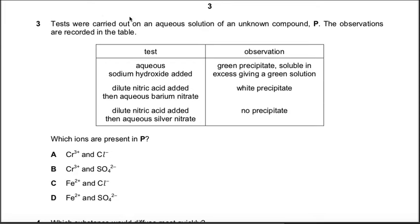Question number three: tests were carried out on aqueous solution of unknown compound P. The observations are recorded in the table. Test: aqueous sodium hydroxide added, green precipitate. Green precipitate means it may be iron 2 and it may be chromium 3.